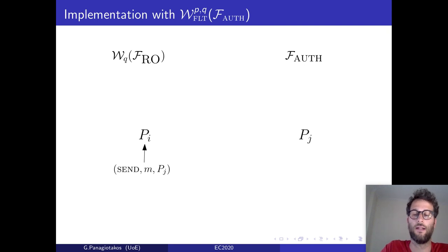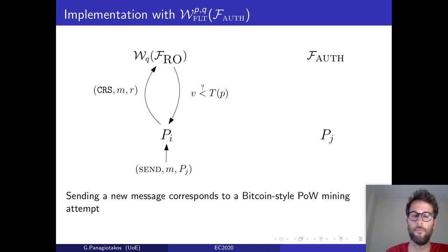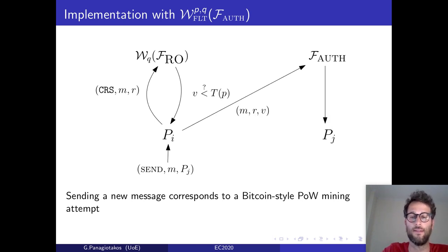Next, I'll give a high-level description of our protocol. Our protocol is inspired by Bitcoin proof-of-work mining. So whenever a party tries to send a message M, it queries the access-bounded random oracle with the CRS, a message, and a nonce value. And if the resulting hash is smaller than some target, it sends the message, the nonce, and the hash value, through the authenticated network to the designated party.